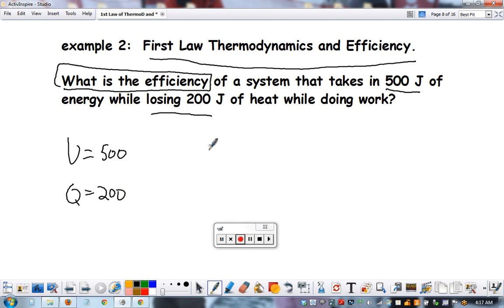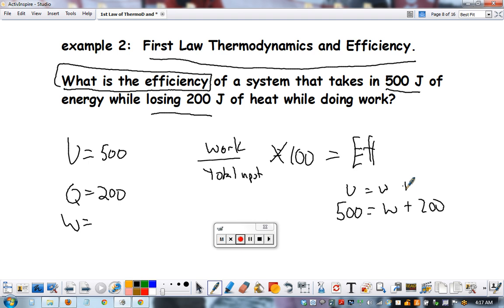Well, we need to know work over the total input times 100 to find efficiency. But I don't know work yet. So I have to find that. U equals work plus Q, so 500 equals work plus 200. So this is 300.